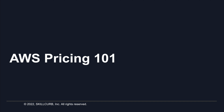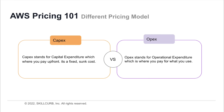AWS Pricing 101. There are two types of pricing models: CapEx and OpEx. CapEx stands for capital expenditure, where you pay up front — it's a fixed sunk cost. Think of it like buying servers, storage, or network equipment upfront. For a startup, you wouldn't have been able to afford buying physical servers and all of that as an upfront cost because you didn't have any money when starting up.